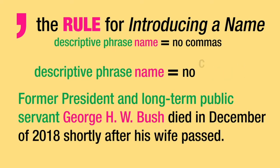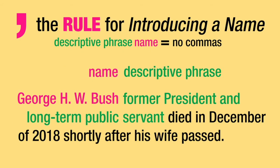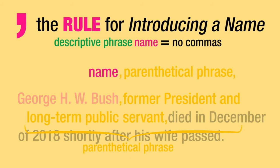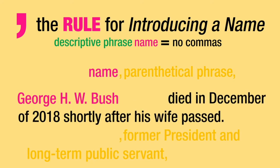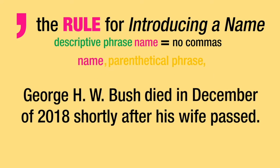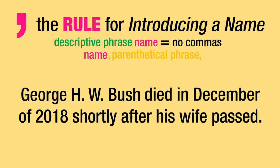If, however, we move that descriptive phrase to after the name, then you must use a comma before and after the descriptive phrase. It becomes what's called a parenthetical phrase — this just means you could grab that phrase and pull it out of the sentence and it would still make sense. 'George H. W. Bush died in December of' — see? The sentence works with that whole descriptive phrase removed.